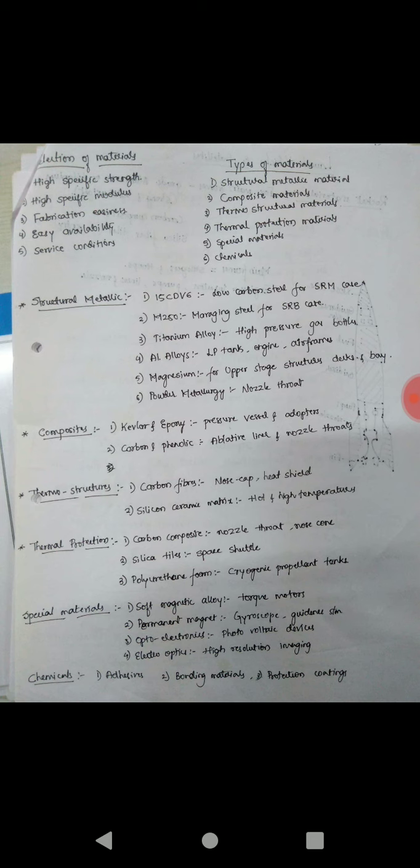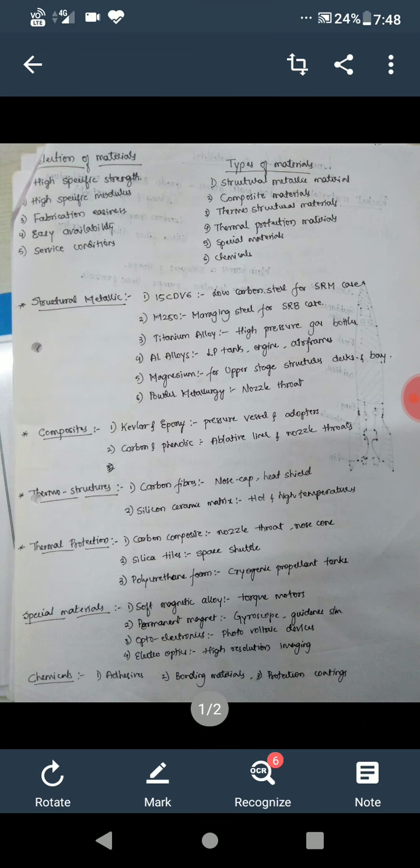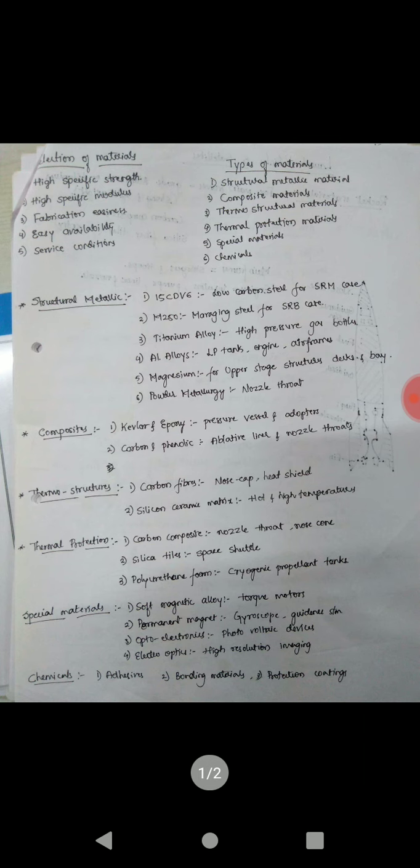Thermal protection materials include carbon composite for nozzle throats and nose cones, silica tiles for space shuttles, and polyurethane foam for cryogenic propellant tanks. Special materials include soft magnetic alloy for torque motors, permanent magnets for gyroscope guidance, optoelectronics for photovoltaic devices, and electro-optics for high resolution imaging.